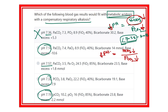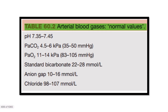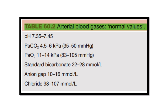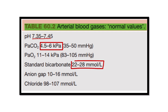We must remember the normal ranges to answer this question. Normal pH: 7.35 to 7.45. Partial pressure of carbon dioxide: 4.5 to 6 kilopascals — very important to remember. Standard bicarbonate level: 22 to 28. These three parameters are very important to remember to answer any ABG question.